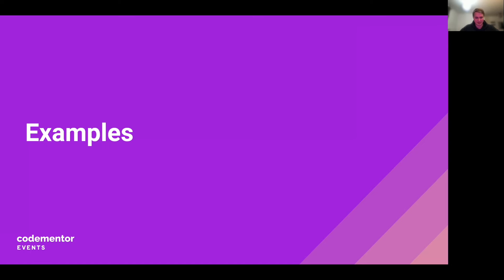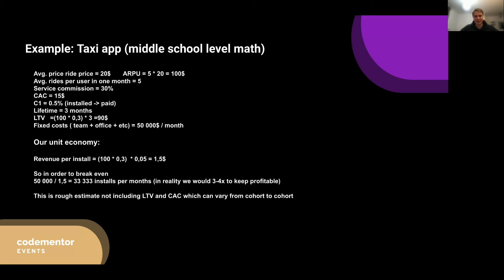Now for a practical example: a taxi app unit economics calculation. It's middle-school level math. We have average ride price, average rides per user per month, service commission — what we charge as a service per ride — a conversion metric, and fixed costs of roughly $50,000 per month.